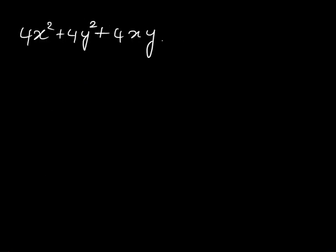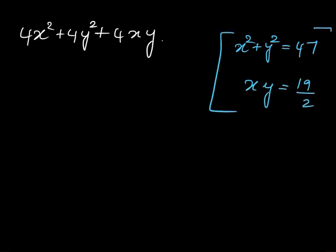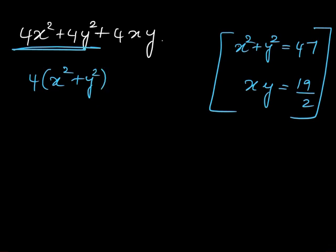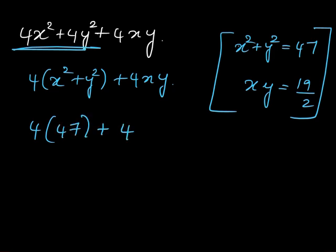From the question we have the conditions that x squared plus y squared is equal to 47 and xy is equal to 19 by 2. From the first two terms, take 4 as common so you end up having 4 multiplied with x squared plus y squared plus 4xy. Now replace x squared plus y squared with 47 and xy with 19 by 2.